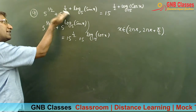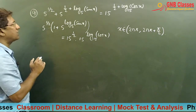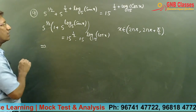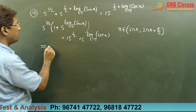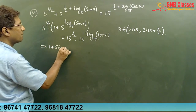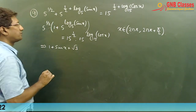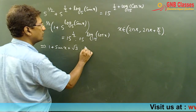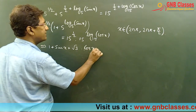The left-hand side can be written as 5 to the power half into 5 to the power log sin x base 5. Taking root 5 common, and after simplification, we are left with 1 plus sin x equals root 3 into cos x.